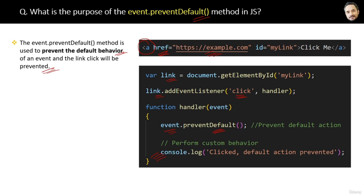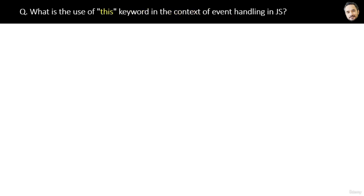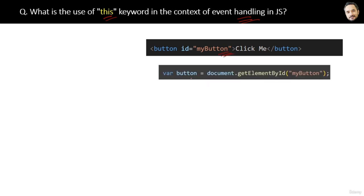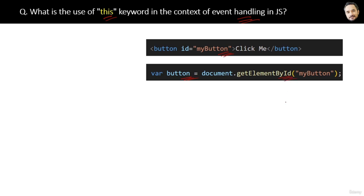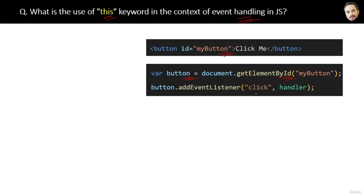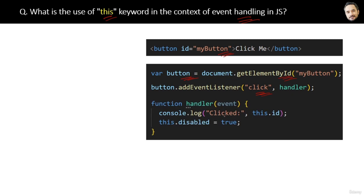Now you also know why the event object is important — it enables various things like preventDefault. What is the use of the 'this' keyword in the context of event handling? If we have a button element, get its reference, and attach an event, then inside the function the 'this' keyword will refer to the element to which the event handler is attached — in this case, the button element.